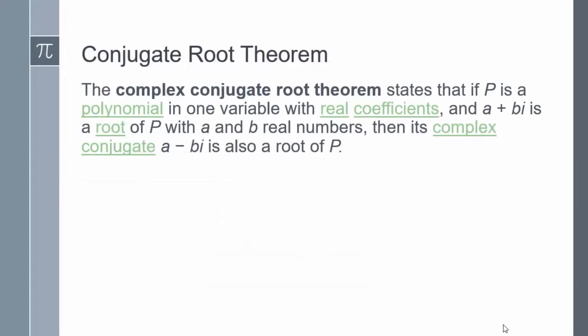The conjugate root theorem states that if p is a polynomial in one variable with real coefficients, and a plus bi is a root of p where a and b are real numbers, then its complex conjugate a minus bi is also a root of p. That means if you have a complex solution such as x plus i, then you also have its conjugate x minus i as a solution.